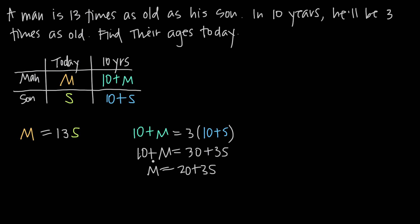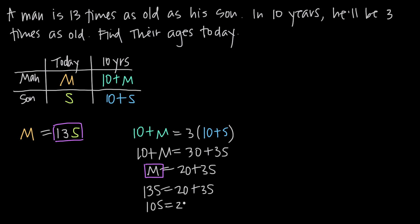Now we have two expressions equal to m: m = 13s and m = 20 + 3s. Since both equal m, they must equal each other. Substituting 13s in for m eliminates m, leaving only s variables: 13s = 20 + 3s. Subtracting 3s from both sides gives 10s = 20, so s = 2.